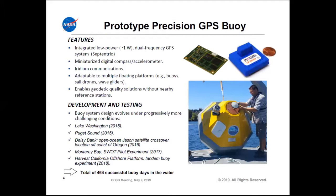Our prototype buoy has a tiny credit card-size GPS receiver drawing about one watt. It tracks GPS, GLONASS, BeiDou, and the new Galileo system. It has a miniaturized digital compass and accelerometer inside. To get data back in real time, we use Iridium communications — we can't yet get back one-hertz data, pulling back lower rate data. It's adaptable to multiple floating platforms — not just buoys but saildrones and wave gliders. It enables geodetic quality solutions without nearby reference stations. We took baby steps: first deploying in an enclosed lake, then Puget Sound, then open ocean tests, with about 500 successful buoy-days of tracking.